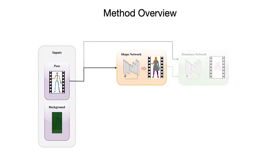As body part segmentations do not provide information about internal deformations within the clothing, we apply a second translation network that estimates the internal structure of clothing as direction and confidence of local gradients. The resulting clothing structure estimates the state of wrinkles and texture pattern deformations that are crucial for visually appealing motion transfer.